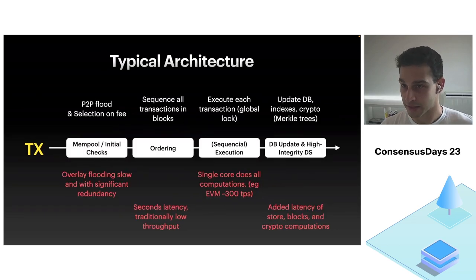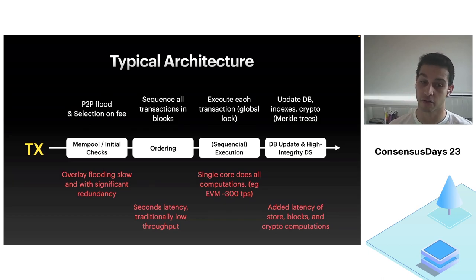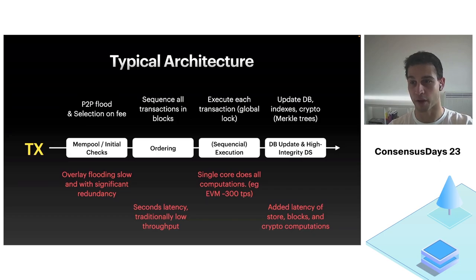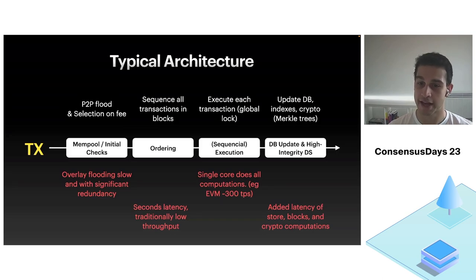Typical systems work like this: transactions come in, they go through something that looks like a mempool, some initial checks are done, there is significant redundancy, sometimes we propagate the same transactions more than once, and then we go through the ordering layer. The ordering layer at best takes a few seconds and does consensus, totally ordering all transactions.